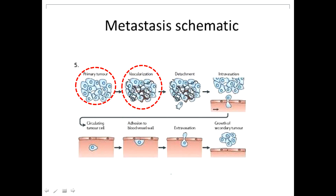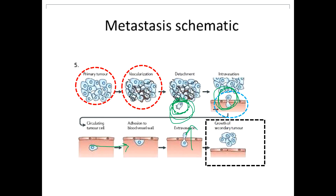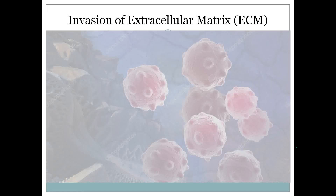To make it clearer: there is vascularization of the primary tumor, then detachment of tumor cells — achieved by loss of E-cadherin. After detachment, there is intravasation of tumor cells into blood vessels, then they circulate as tumor emboli. When they reach their distant site, there is extravasation, and then growth of the secondary tumor because of metastasis. This is the whole metastatic cascade.